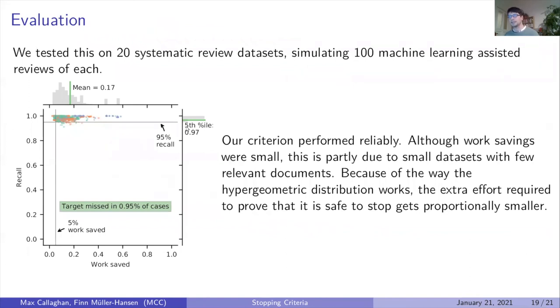We tested this on 20 systematic review datasets, simulating 100 machine learning assisted reviews of each. Our criterion performed reliably. You can have a look at the paper to see how this compares to other approaches, but it's the only one that's actually reliable in this sense.